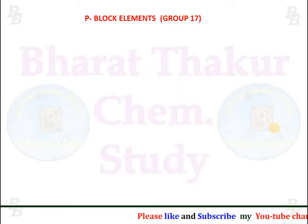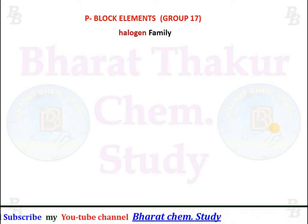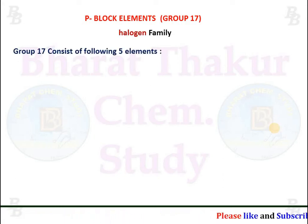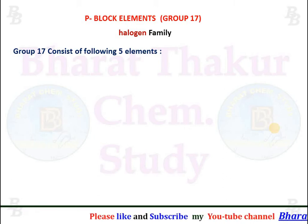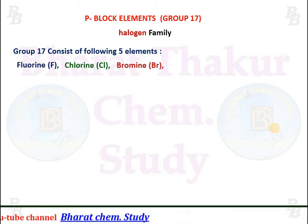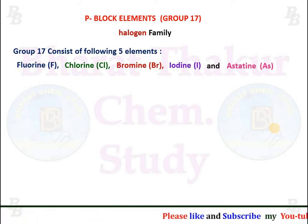P block elements group 17 is also called the Halogen Family. Group 17 consists of the following 5 elements: Fluorine, Chlorine, Bromine, Iodine, and Astatine.